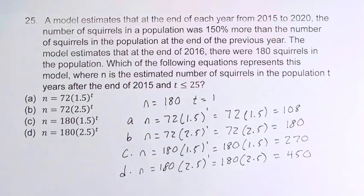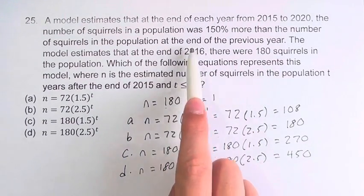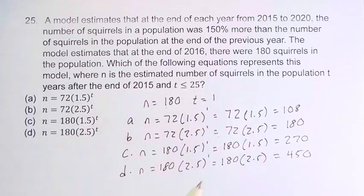So without even constructing an equation on our own, by just plugging in these points, we can see that only b lines up with the estimated value for 2016. Therefore, b is our final answer.